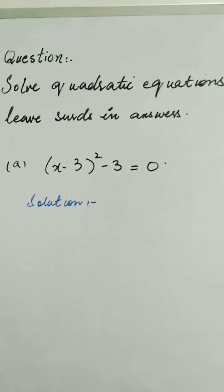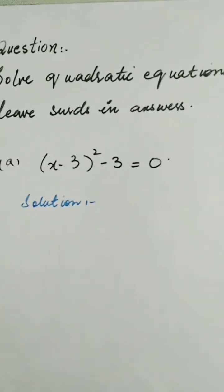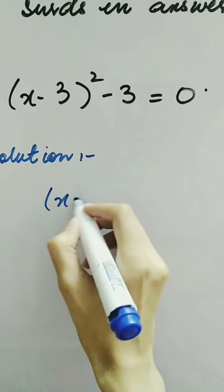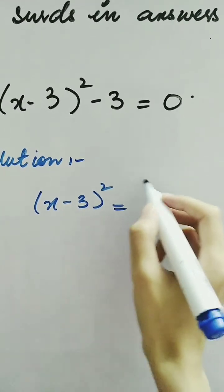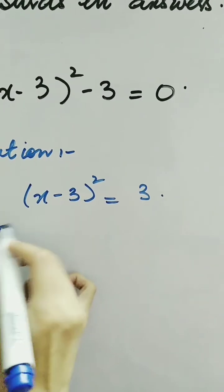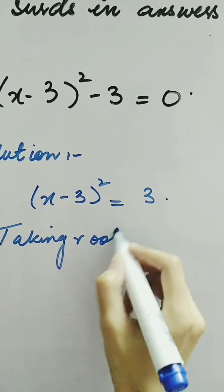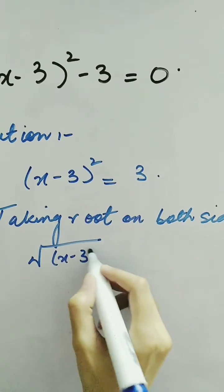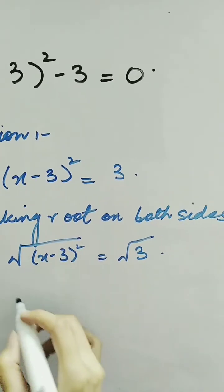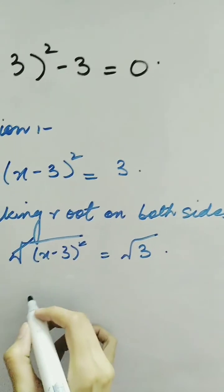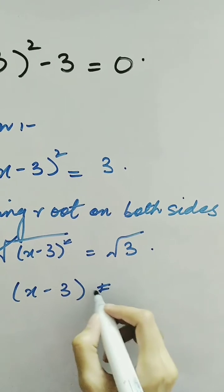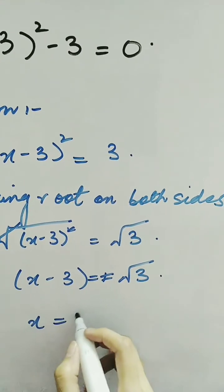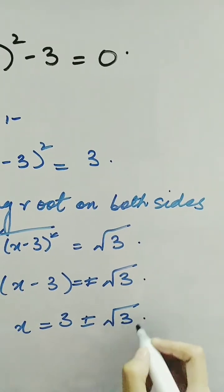Here we have another question in which we have to solve quadratic equations and leave answers in surd form. The first question is (x - 3)² - 3 = 0. We take the -3 to the right-hand side: (x - 3)² = 3. Taking the root of both sides removes the square, giving x - 3 = ±√3. Taking 3 to the right-hand side, x = 3 ± √3. This is our answer.